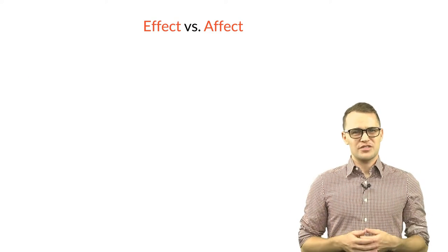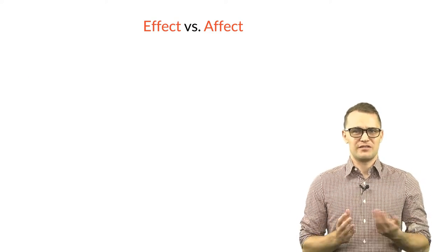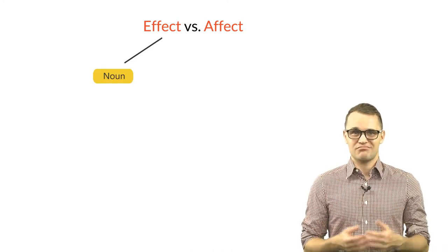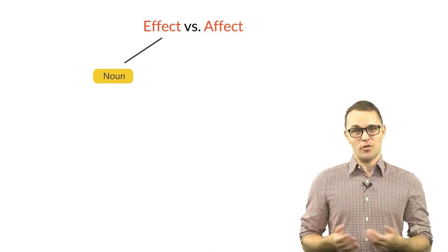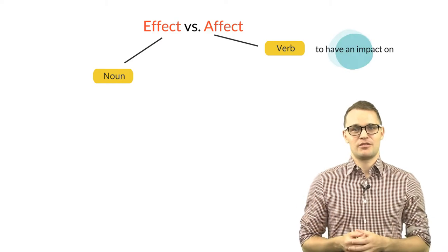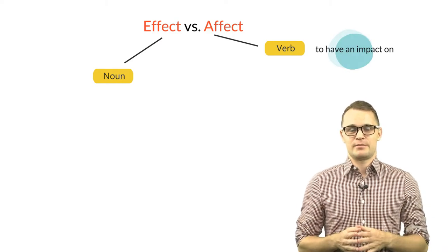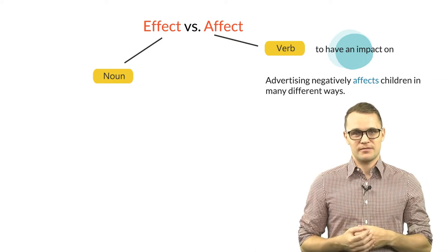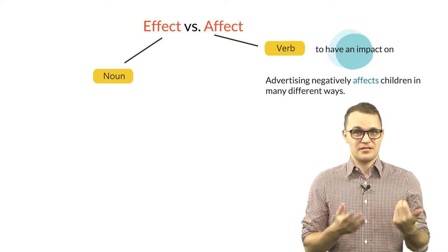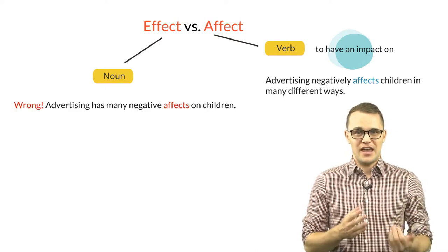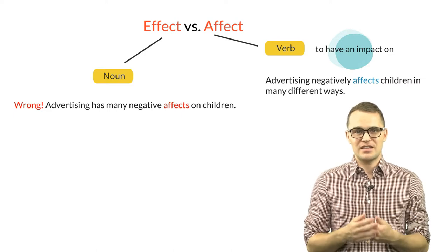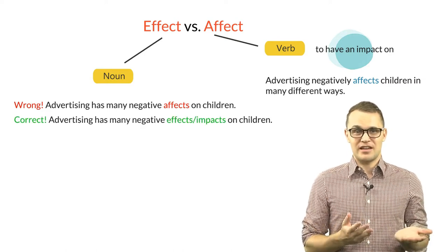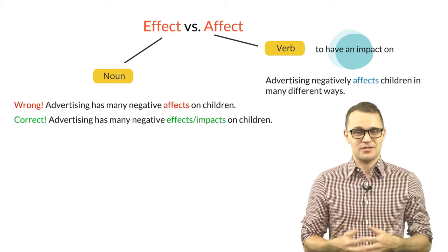A lot of students often get confused between effect and affect. Effect is a noun. Affect is mostly used as a verb, meaning to have an impact on. An example of this is: advertising negatively affects children in many different ways. Since to affect is a verb, it's wrong to say advertising has many negative affects on children. It should be: advertising has many negative effects or impacts on children.